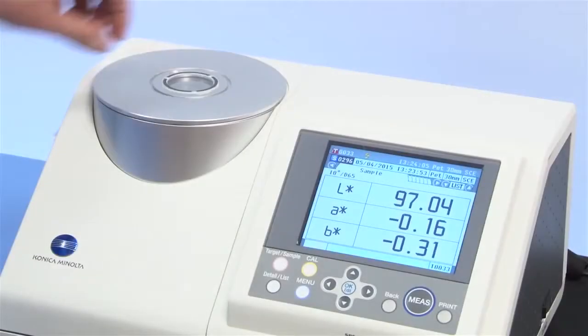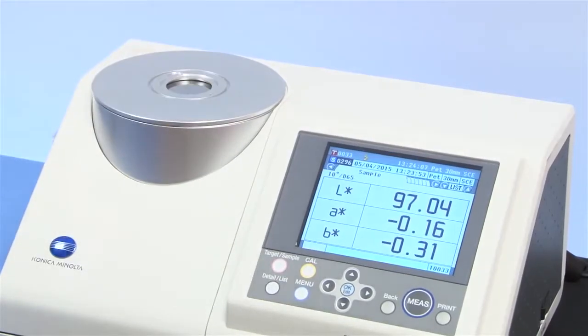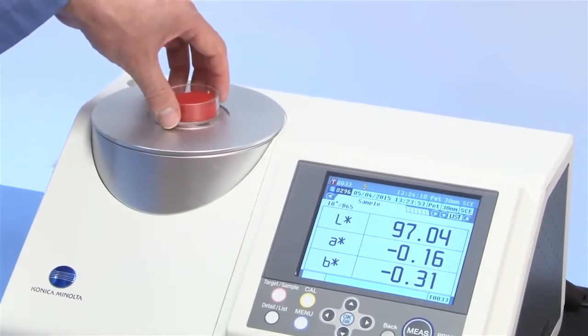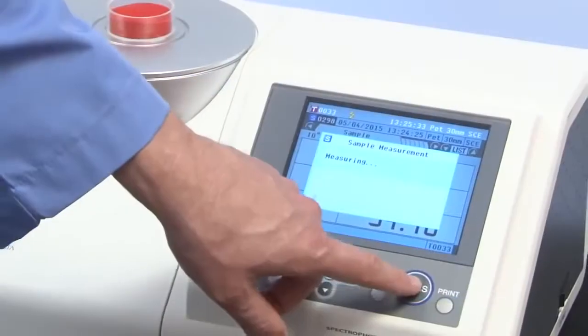This will normalize the instrument when measuring samples through a petri dish. Proceed to measure your targets and samples in reflectance mode as normal.